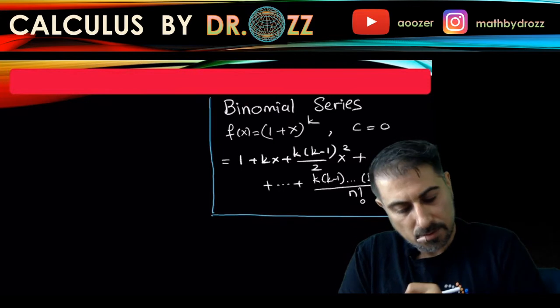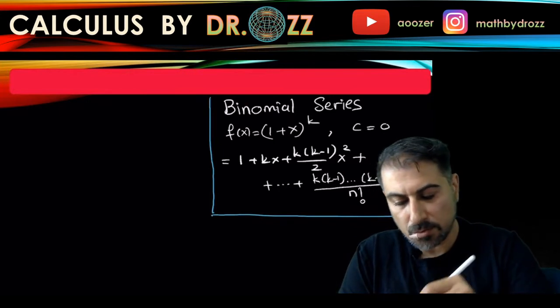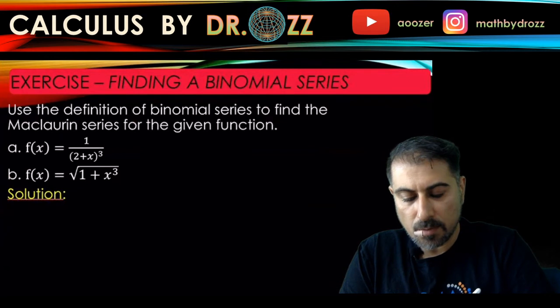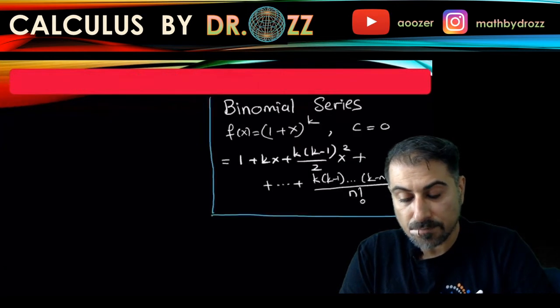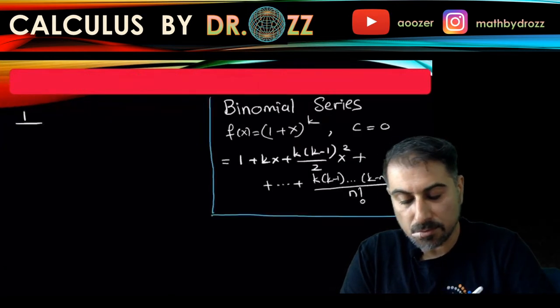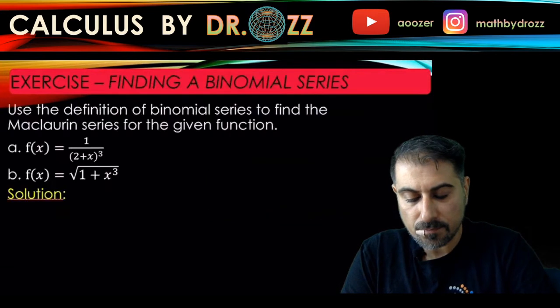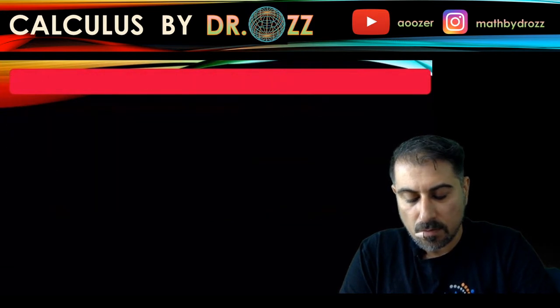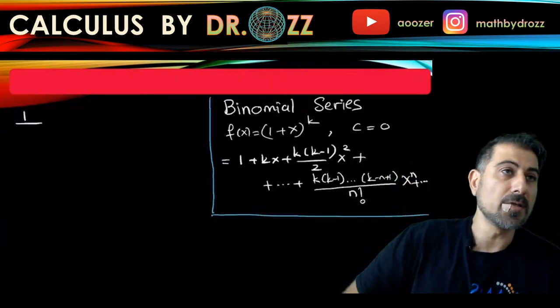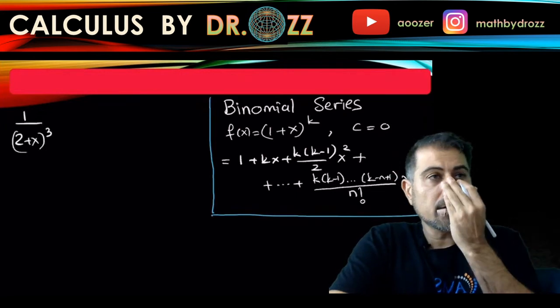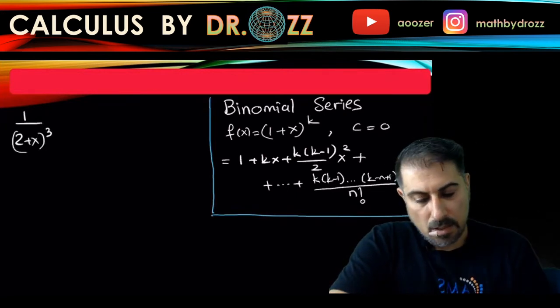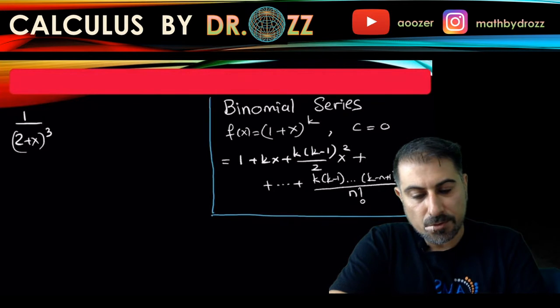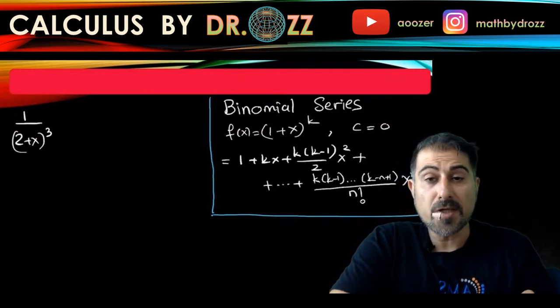So let's go back. We have 1 over (2 + x) quantity cubed. So I have to put this first in this form here. What I'm going to do is factor 2 out because I need 1 plus version of that.